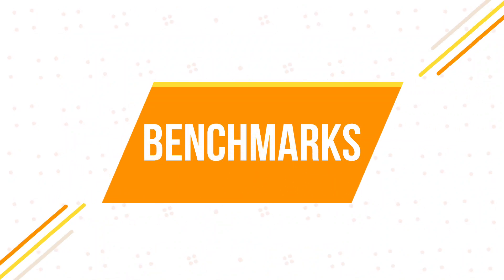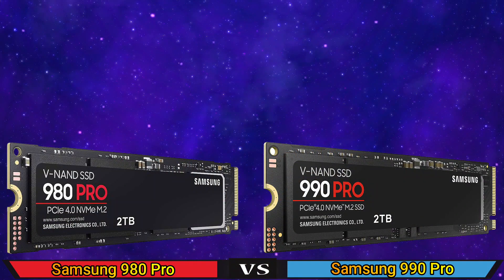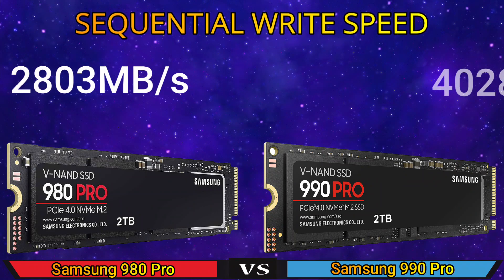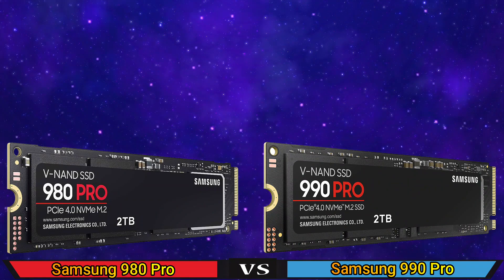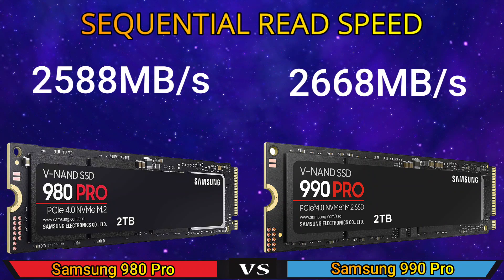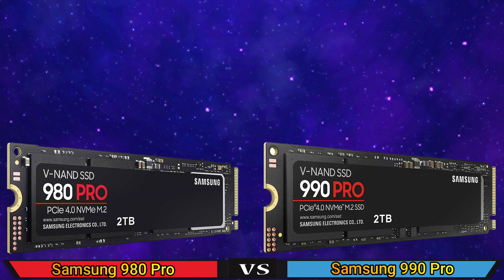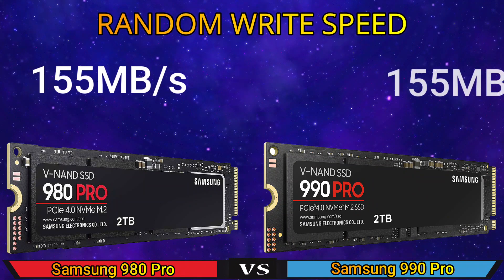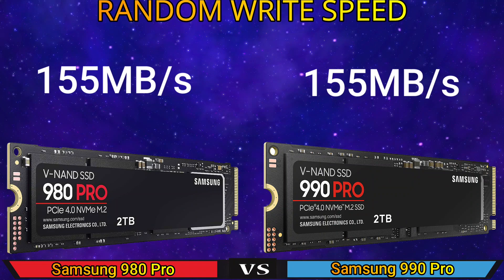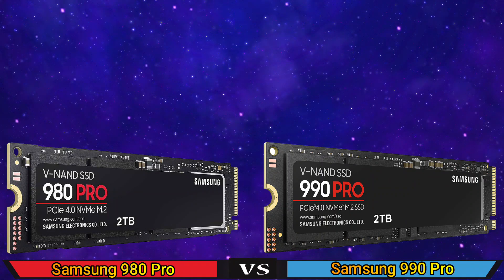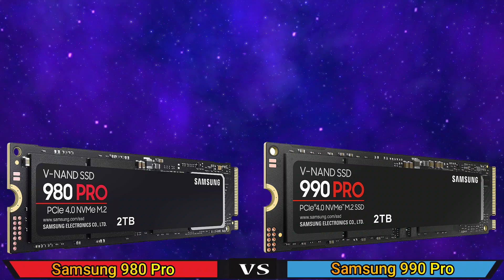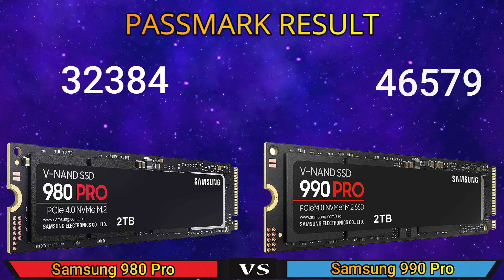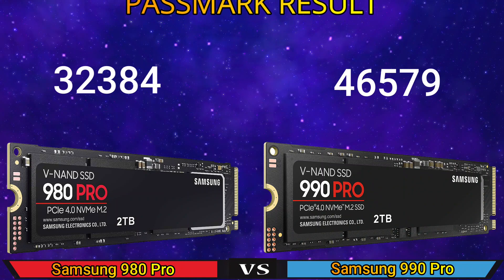Part 2: Benchmark. Sequential write speed, sequential read speed, random write speed, random read speed, BaseMark result, and finally price.